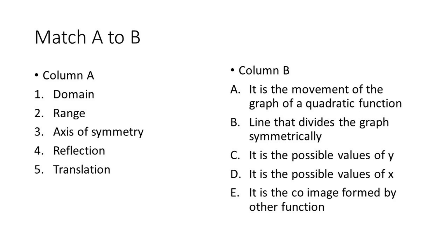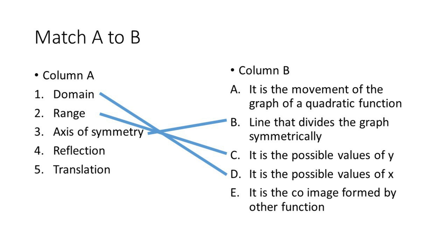Let's match column A to column B. Number one: domain — it is the possible values of X. Number two: range — the possible values of Y. Number three: axis of symmetry — it is the line that divides the graph symmetrically. Number four: reflection — it is the co-image formed by the other function. Number five: translation — it is the movement of the graph of a quadratic function.